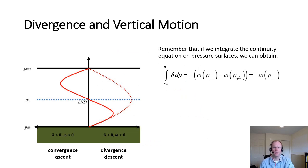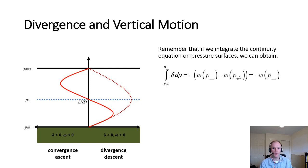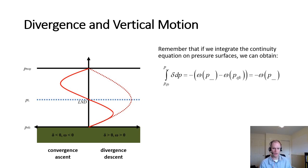The continuity equation allows us to relate divergence to vertical velocity. If we integrate the divergence from the surface up to some arbitrary pressure level p, we get an expression where the right-hand side equals the negative of the vertical velocity at that arbitrary pressure level, minus the vertical velocity at the surface. Because the surface is a rigid bound on vertical motions, there is no vertical velocity across the ground, so that term drops out, leaving us with just the negative of the vertical velocity at that arbitrary pressure level.